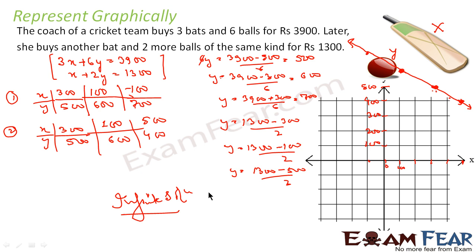What we have done: we assumed bag to be x and ball to be y — the cost price. We got the equations 3x + 6y = 3900 and x + 2y = 1300. We got the values of x and y, plotted the graph, and found that both lines are coincident.